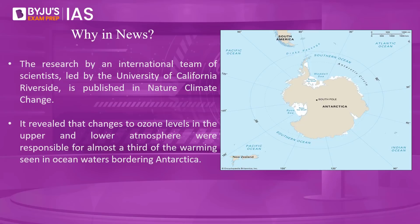This topic is in the news because research by an international team of scientists, led by the University of California, Riverside, is published in Nature Climate Change — a peer-reviewed scientific journal published by the Nature Publishing Group and a very reputed scientific journal. According to this research, changes to ozone levels in the upper and lower atmosphere have been responsible for almost a third of the warming seen in ocean waters bordering Antarctica.